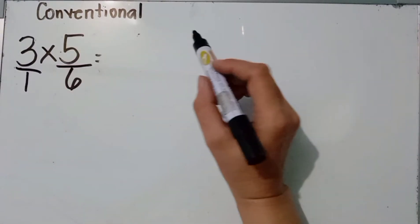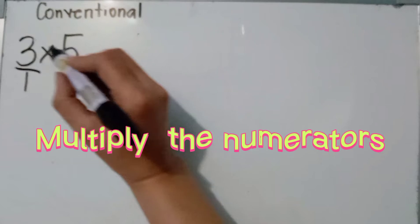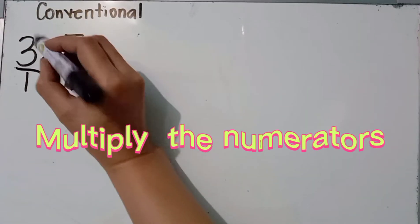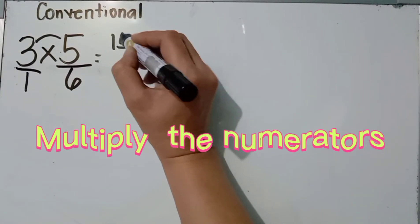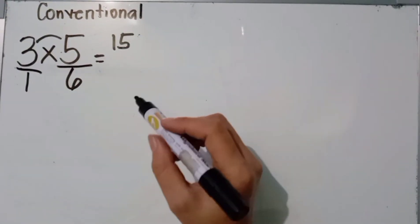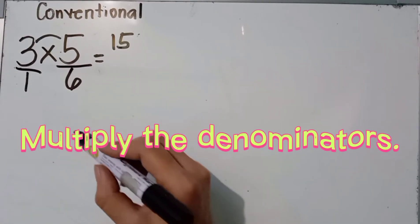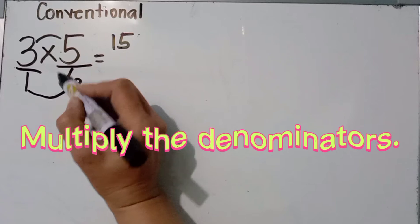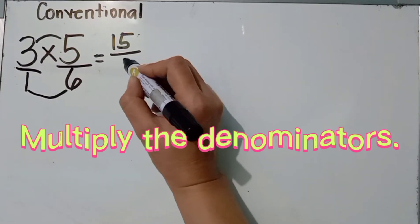Using the conventional method, the first step is to multiply the numerators. The numerators are three and five, so three times five equals fifteen. Next, we multiply the denominators. The denominators are one and six, so one times six equals six.